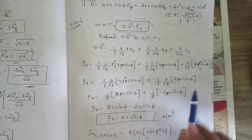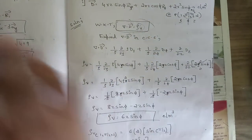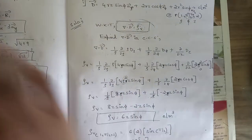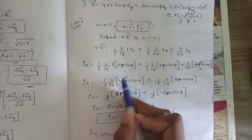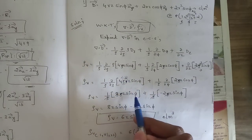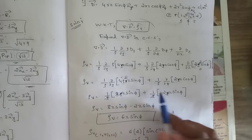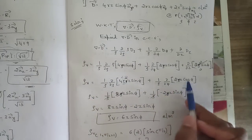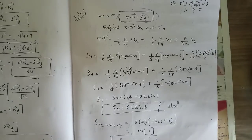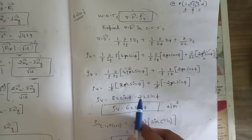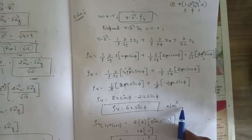Taking ∂/∂ρ of 4ρ²z sinφ gives 8ρz sinφ. Dividing by ρ leaves 8z sinφ. For the φ term: ∂/∂φ of cosφ = −sinφ, giving (1/ρ)(−2ρz sinφ) = −2z sinφ. Canceling ρ, we get del·D = 8z sinφ − 2z sinφ = 6z sinφ. Therefore ρv = 6z sinφ coulombs per meter cubed.